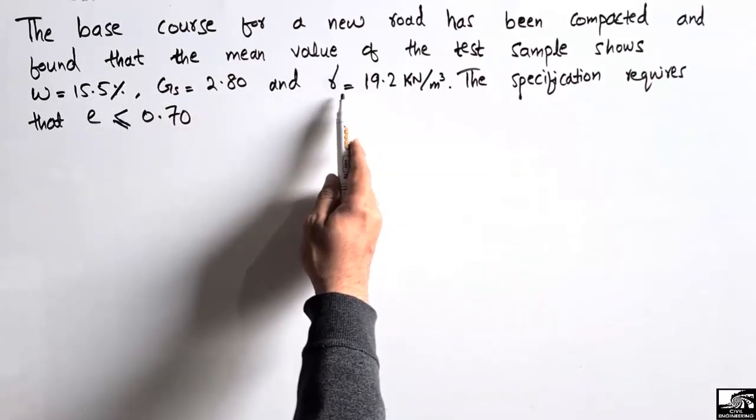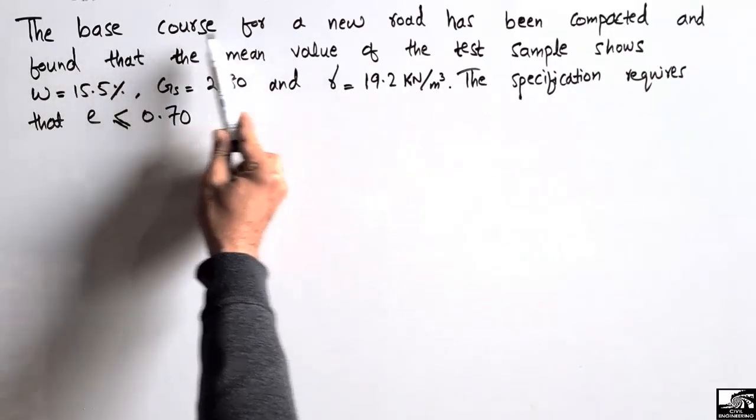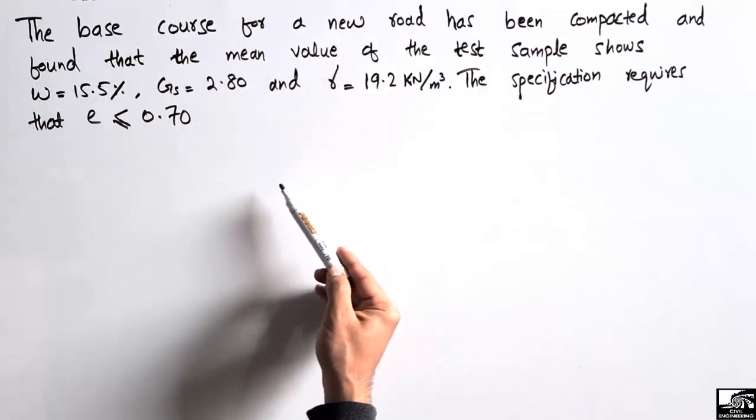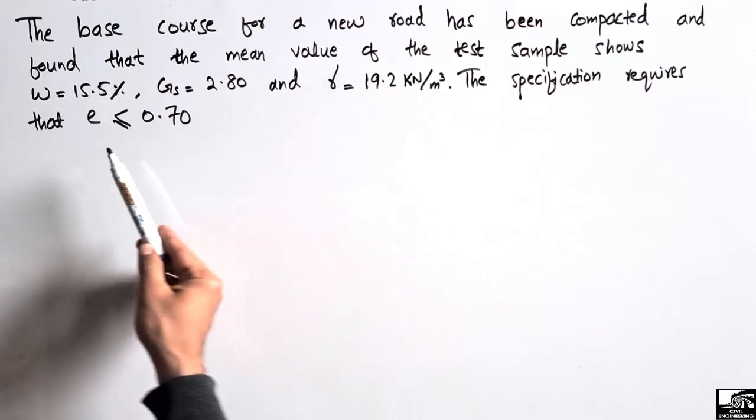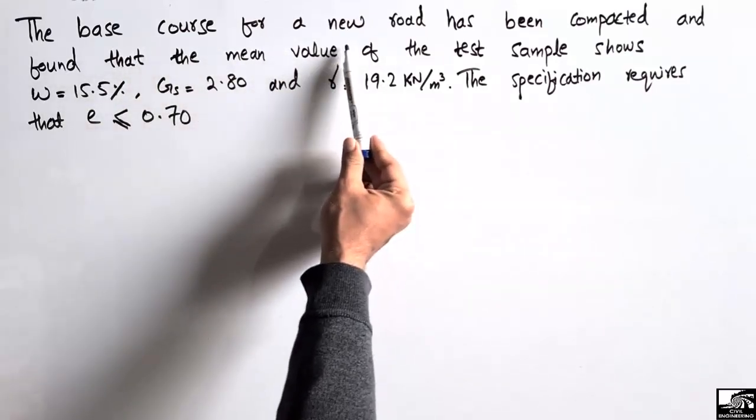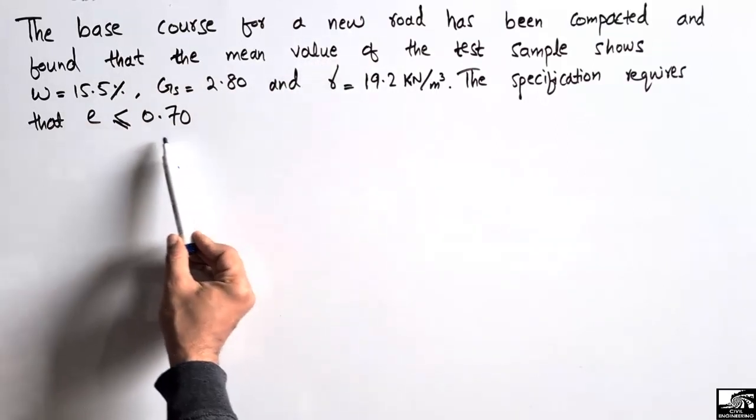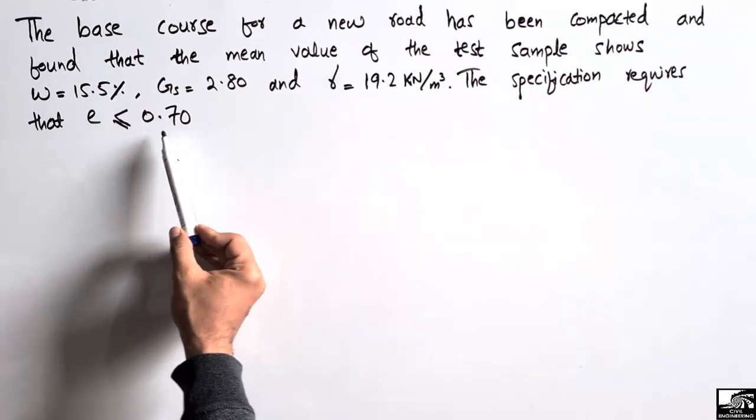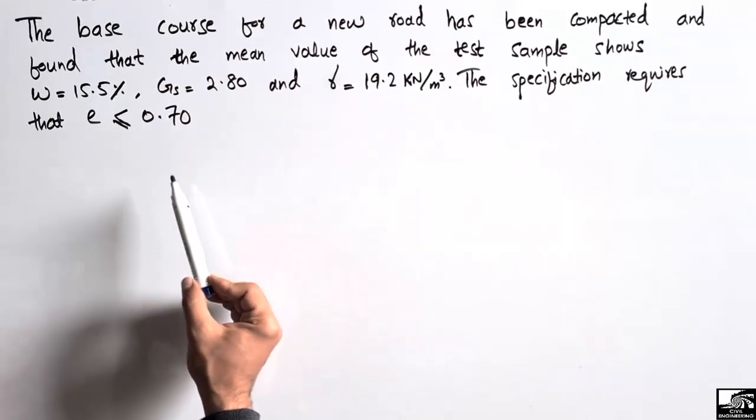We should find out whether the void ratio for this soil sample which has been compacted for a new road is less than 0.70 or greater than 0.70. If it is greater than 0.70, it means that it needs more compaction.